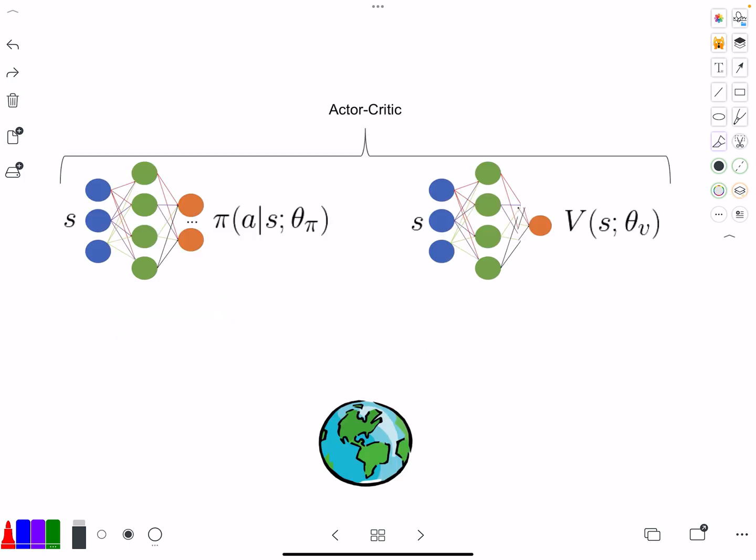So let me give you an overview as to what an actor-critic algorithm typically looks like. You have the world down here and then you have your agent at the top. This is the agent. This is the environment. The environment then outputs an observation. You can pass that observation to your policy. The policy network is going to output an action. You pass that into your environment.